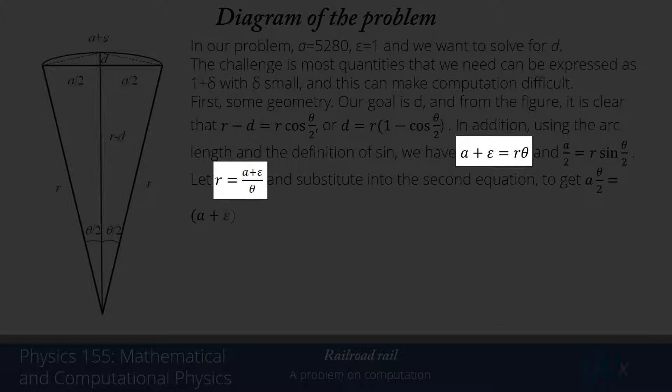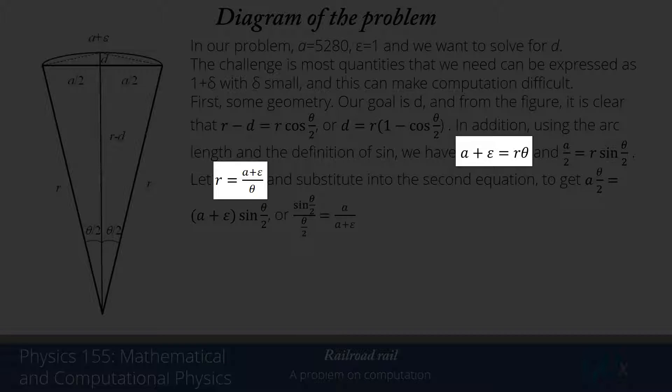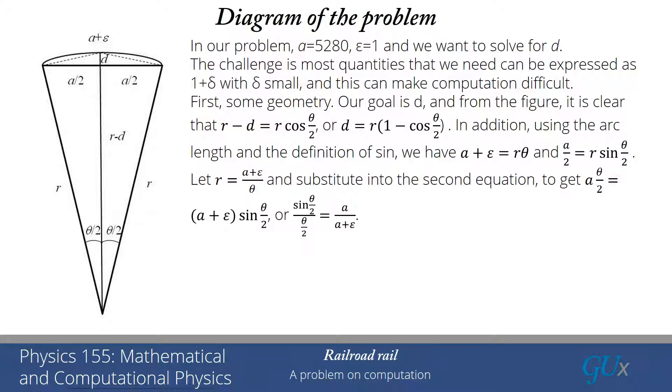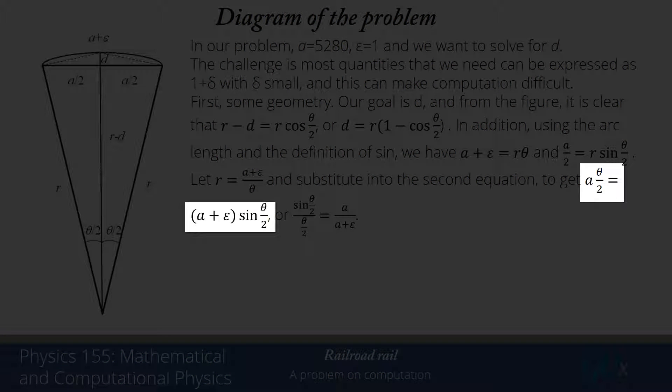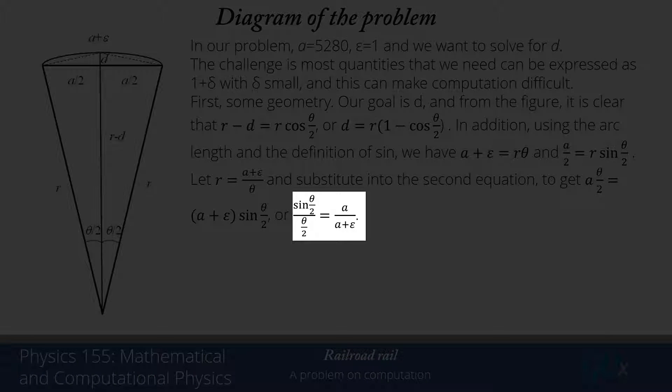Our first step is to look at the first equation and solve for R. So R equals A plus epsilon divided by theta. We're going to substitute that into the second equation and rearrange it. It can be rewritten as A times theta over 2 equals A plus epsilon times sine theta over 2. Then dividing by theta over 2 and by A plus epsilon, we get sine theta over 2 divided by theta over 2 equals A over A plus epsilon.